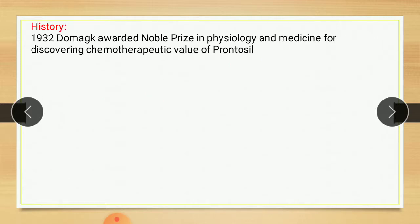Sulphonamide antimicrobial drugs were the first effective chemotherapeutic agents that could be used systemically for the cure of bacterial infections in human beings. Their introduction led to a sharp decline in morbidity and mortality of infectious disease. The rapid development of widespread resistance and increasing use of broad-spectrum penicillin diminished the usefulness of sulphonamide. Today, sulphonamide occupy a rather small space in the list of chemotherapeutic agents.